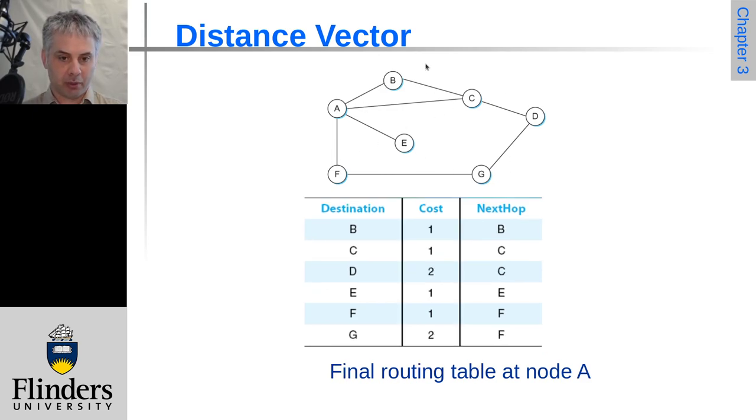But if it combines the information from the other nodes, for example from F, it will hear that F can get to G with a cost of one. A knows the cost to get to F is one. So it will add one to the cost that F reports to get to G, that makes two. So the cost to get to G is two, and the next hop is F because it got that information from F. Where the information is coming in is actually informing A about the path to get somewhere.